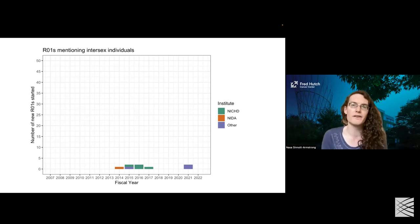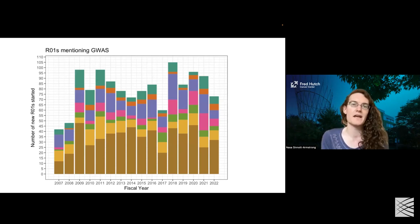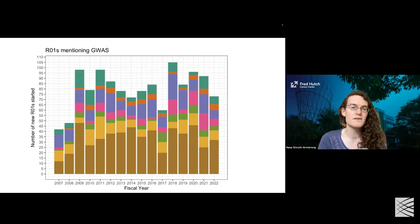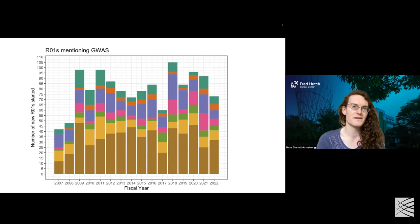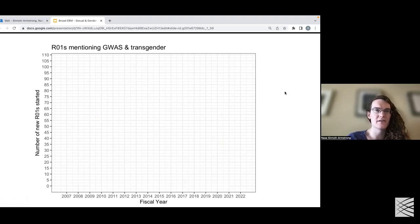I wanted to focus specifically on genetic studies because that's relevant to my work and to the work of many people here today. Looking at the number of R01s at the NIH that have mentioned the word GWAS — from 2007 through 2022, there are 60 to 100 in any given year. There are zero that mentioned both GWAS and transgender. So nobody has tried to look at genetic studies in the context of transgender individuals, which means we can't access the benefits of these methods in sexual and gender minority communities.